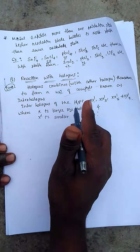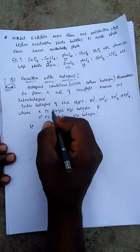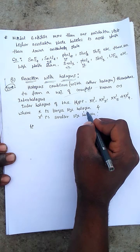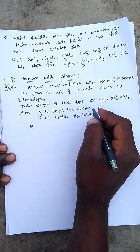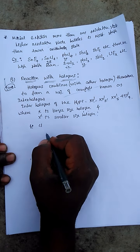For example, if X is chlorine (larger size) and X' is fluorine (smaller size), then ClF is one interhalogen compound.